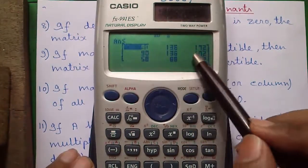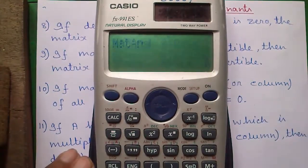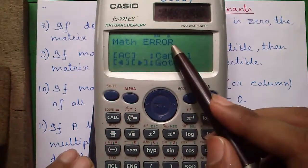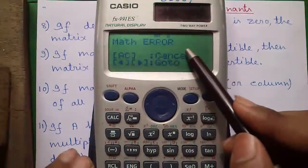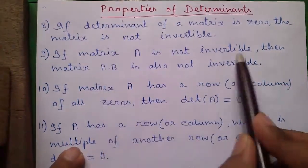So matrix A into B is this which is stored into matrix answer. So let's try to find out inverse of it, we will get a math error. That means it is not invertible. So this property is proved.